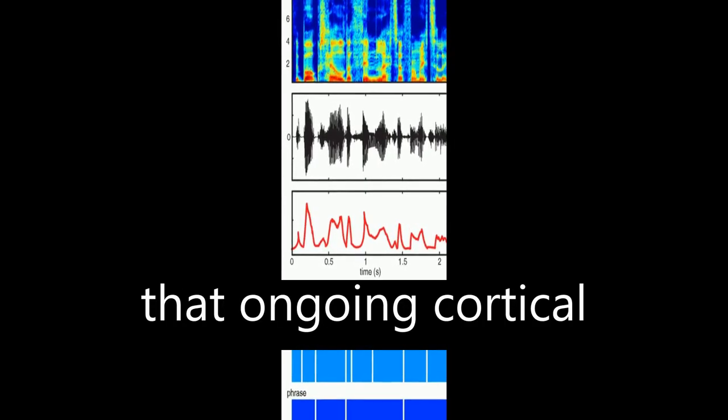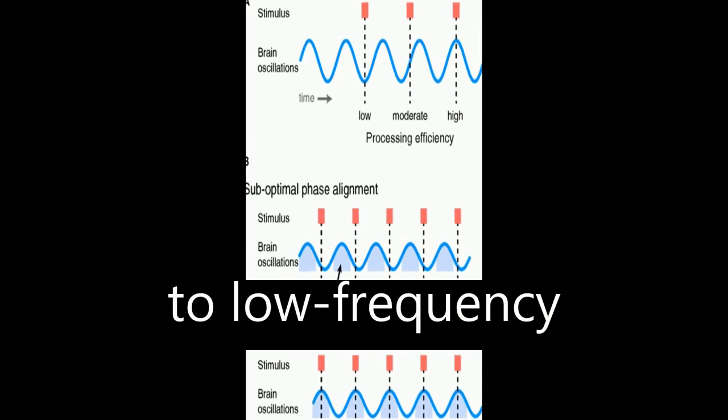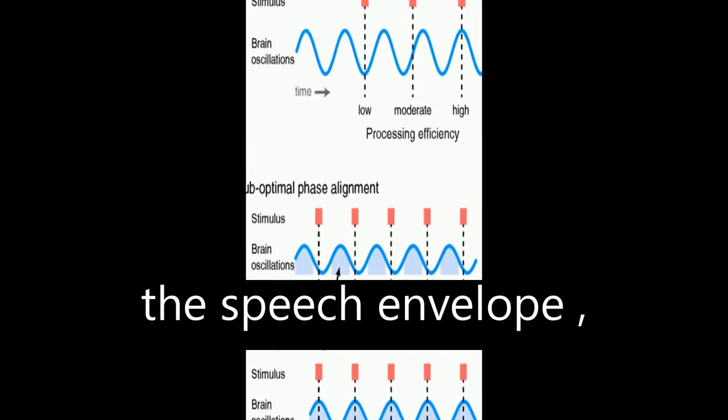Neuroimaging data shows that ongoing cortical oscillations phase locked to low-frequency information, 4 to 8 Hz, in the speech envelope.